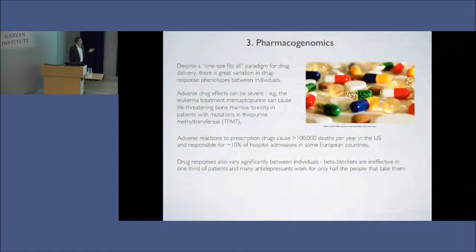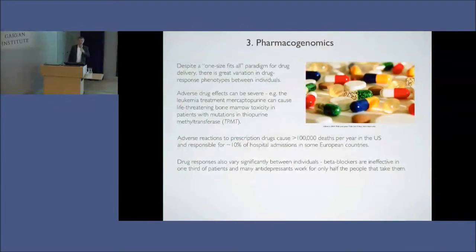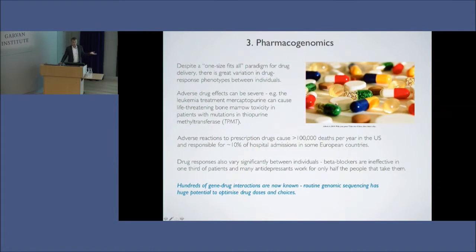The last area I want to mention is pharmacogenomics. This is a huge potential future area. There are something in the order of 100,000 deaths a year in the U.S. from adverse drug reactions to prescription drugs. In Europe, numbers are as high as 10% of hospital admissions as a consequence of adverse drug reactions. It's a remarkable figure, and we understand it has a genetic basis. There are also many cancer treatments where you can react in an instantly toxic way where that treatment will actually kill you. Having prior knowledge of this through genetic information is very, very powerful.